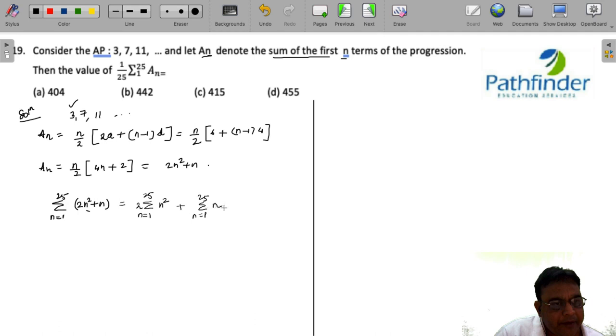Now we know that summation of n² is n(n+1)(2n+1)/6. So what do you get? 2 multiplied by n(n+1)(2n+1)/6. This is summation of n² and plus n(n+1)/2.